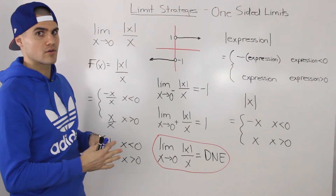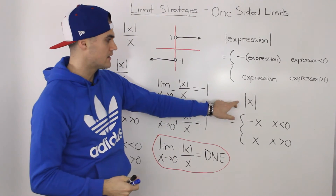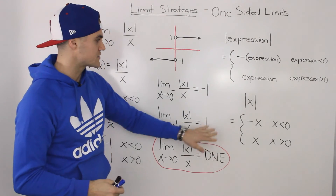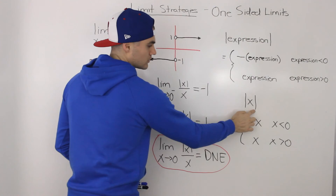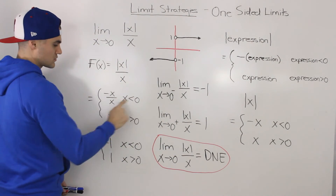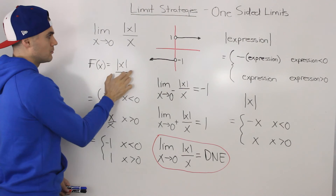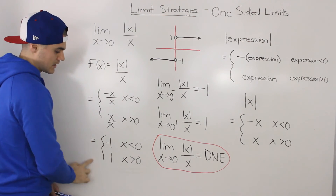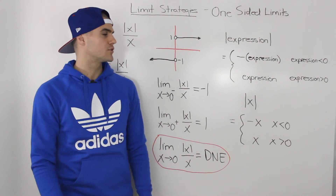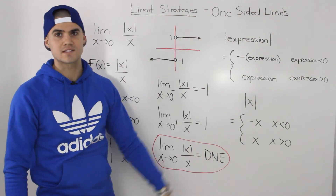In conclusion: first, recognize whenever there's an absolute value expression in the limit. If there is, create a piecewise function for just that expression on the side. Then incorporate it back into the actual function — here we divided the piecewise values by x because the function is absolute value of x over x. Simplify the piecewise function, graph it, then take the limit from both sides to determine whether the general limit exists or not. Don't forget to write down the general absolute value result for use in future one-sided limit problems.